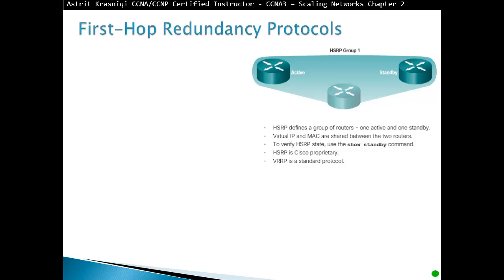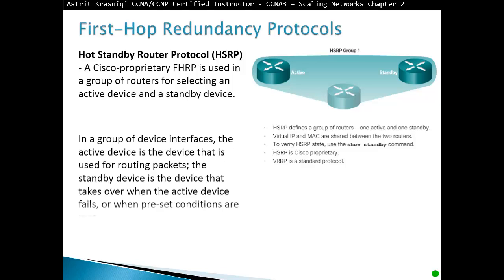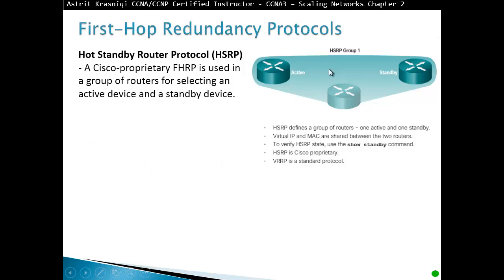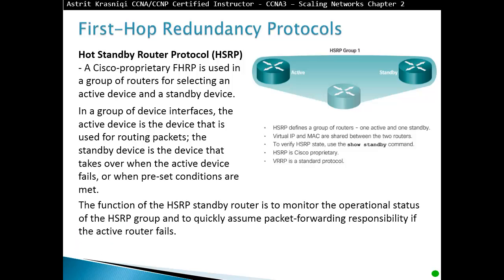First-hop redundancy protocol. HSRP is a Cisco proprietary protocol that uses a group of routers to select an active device and a standby device. The active device is the one used for routing packets, while the standby device takes over when the active device fails or when preset conditions are met. The function of HSRP standby routing is to monitor the operational status of the HSRP group and to quickly assume packet-forwarding responsibility if the active router fails.